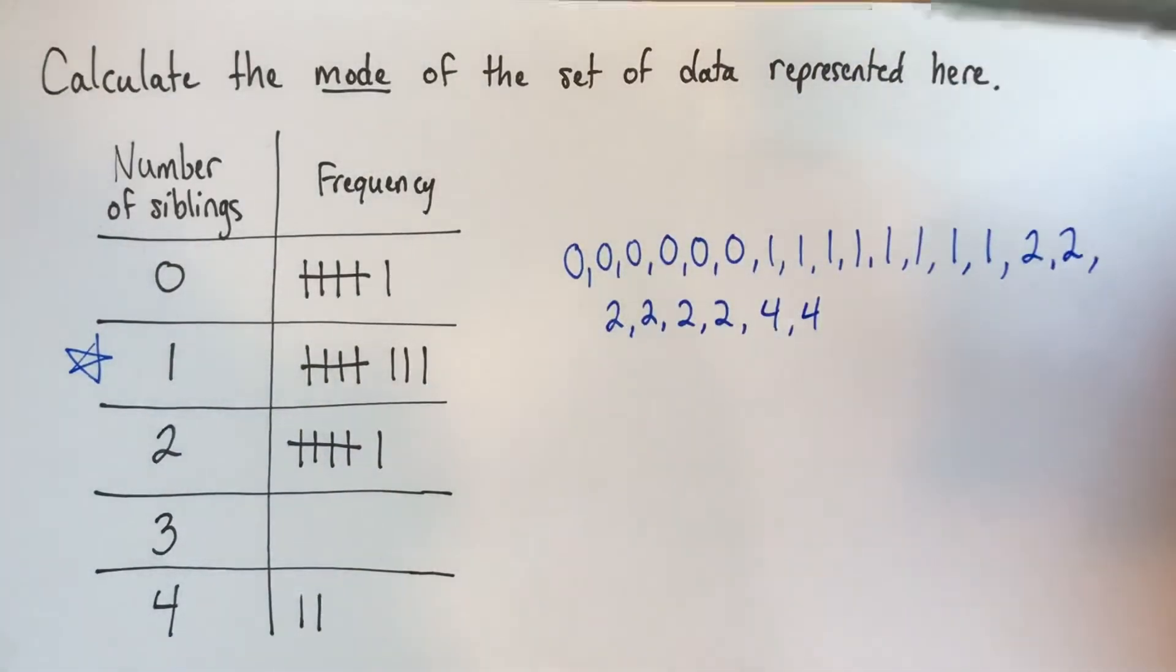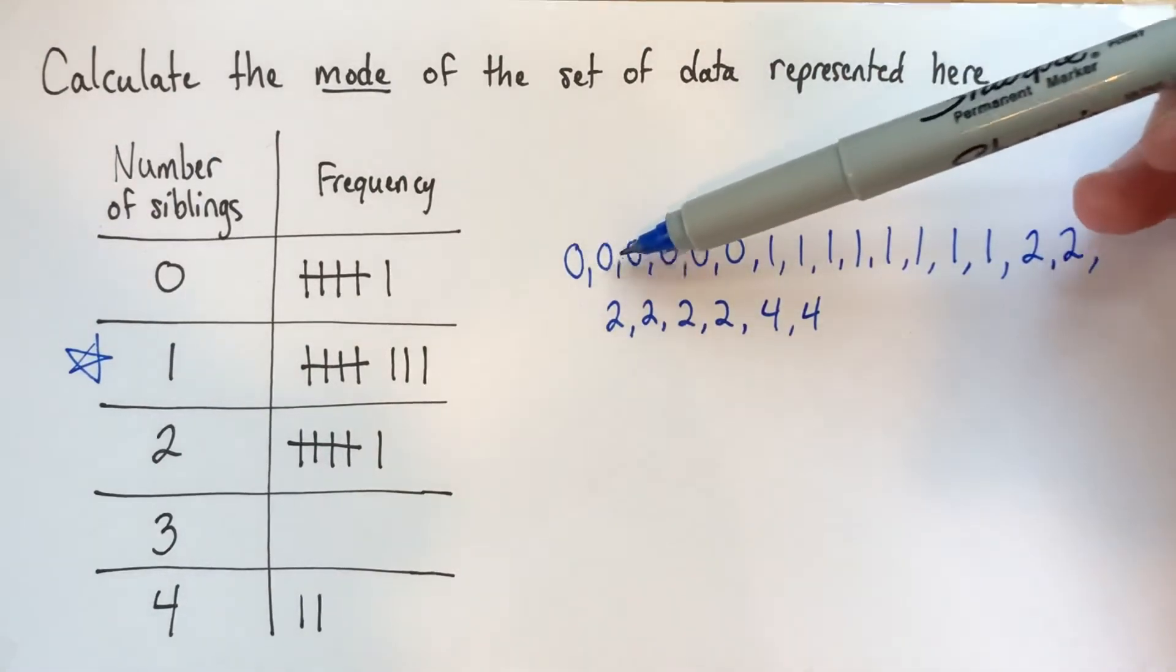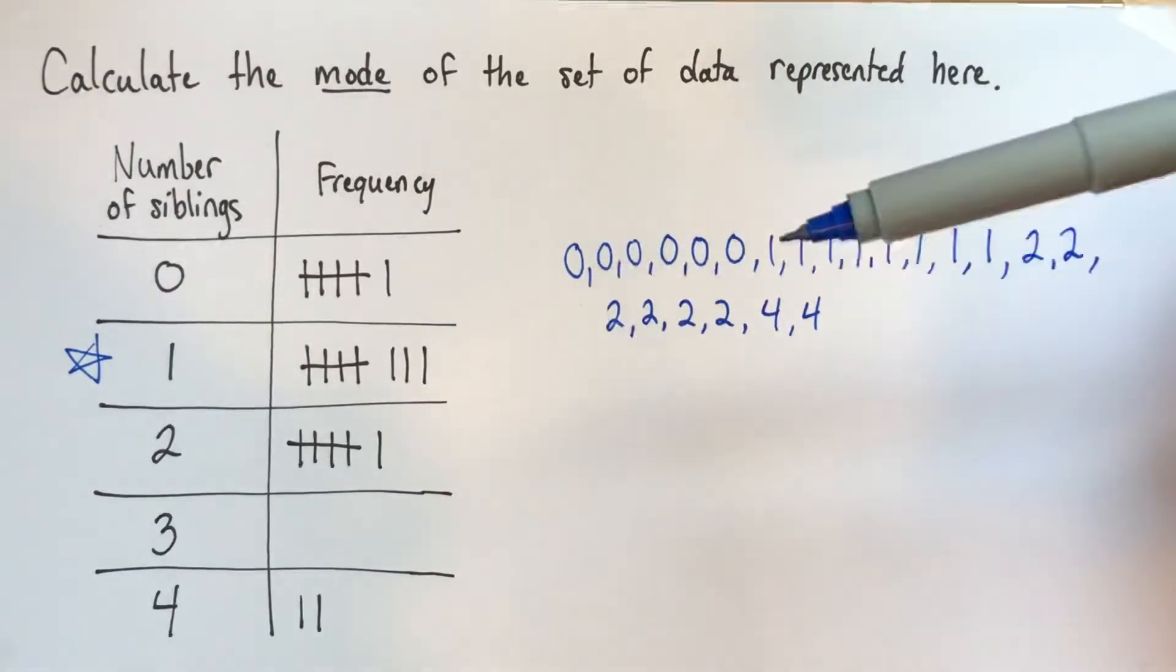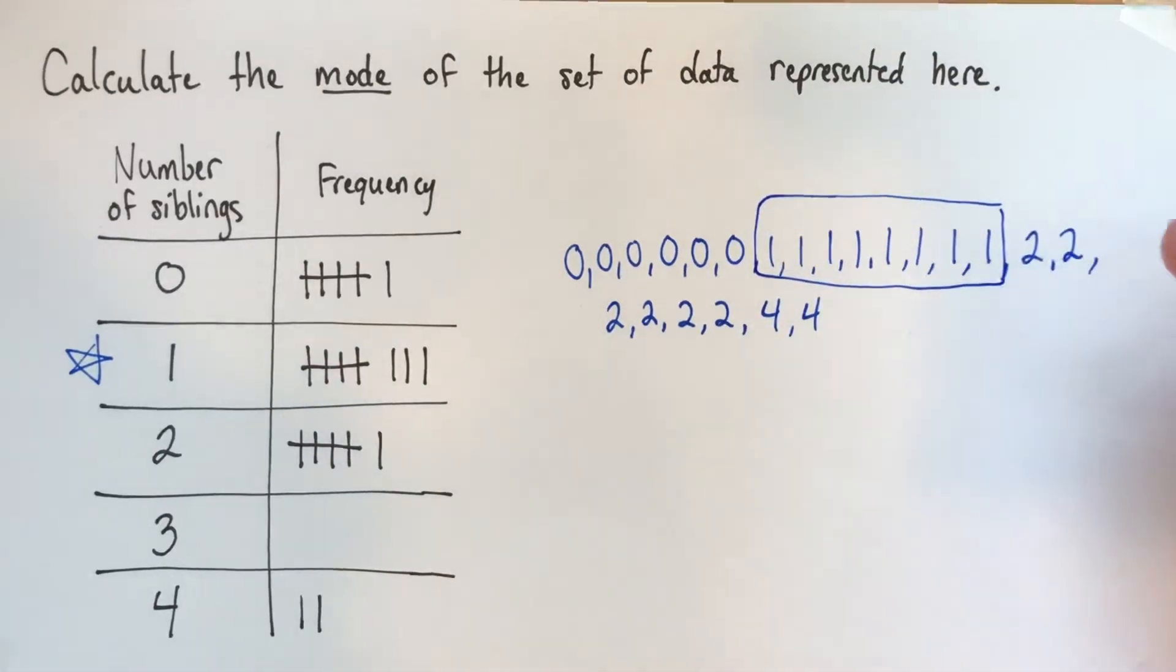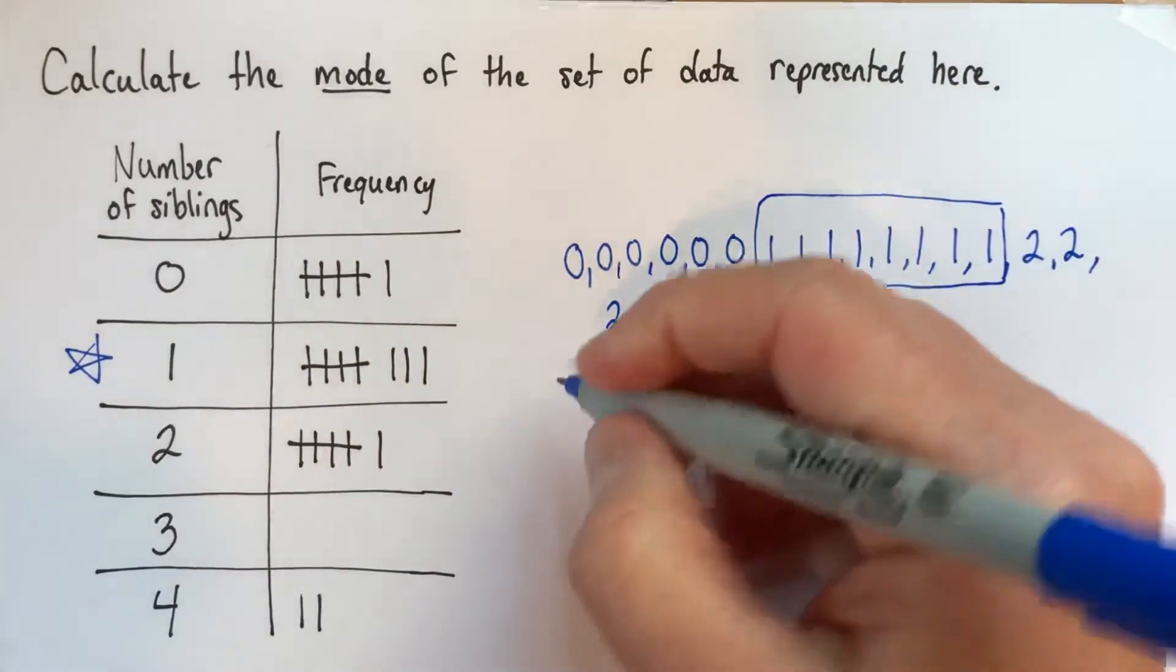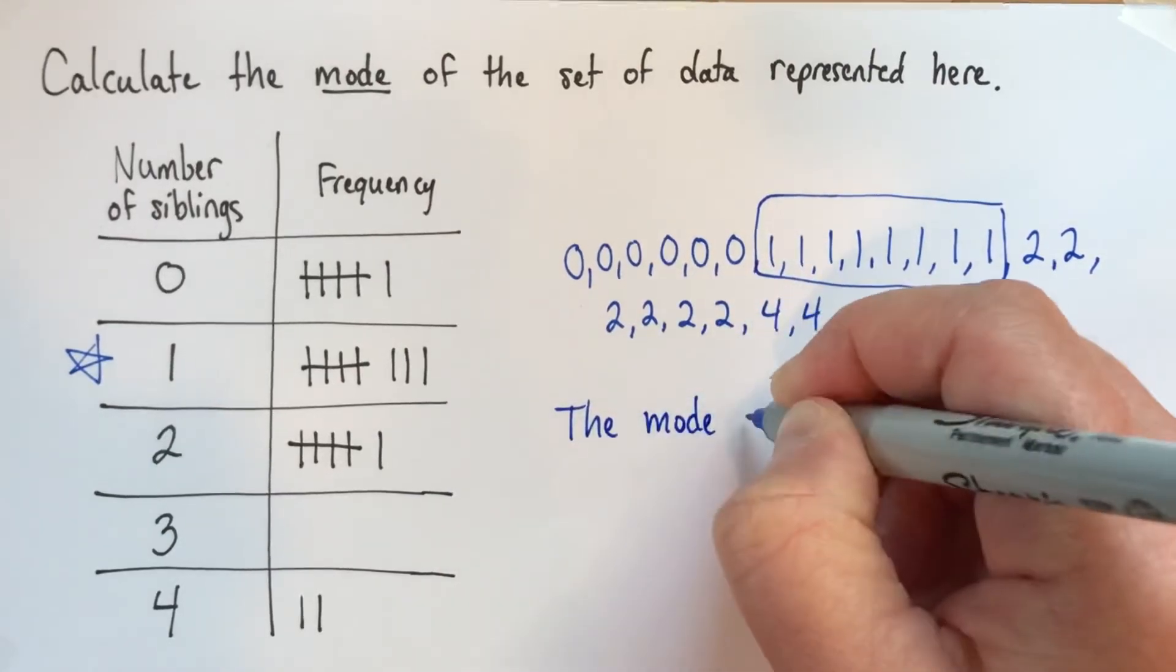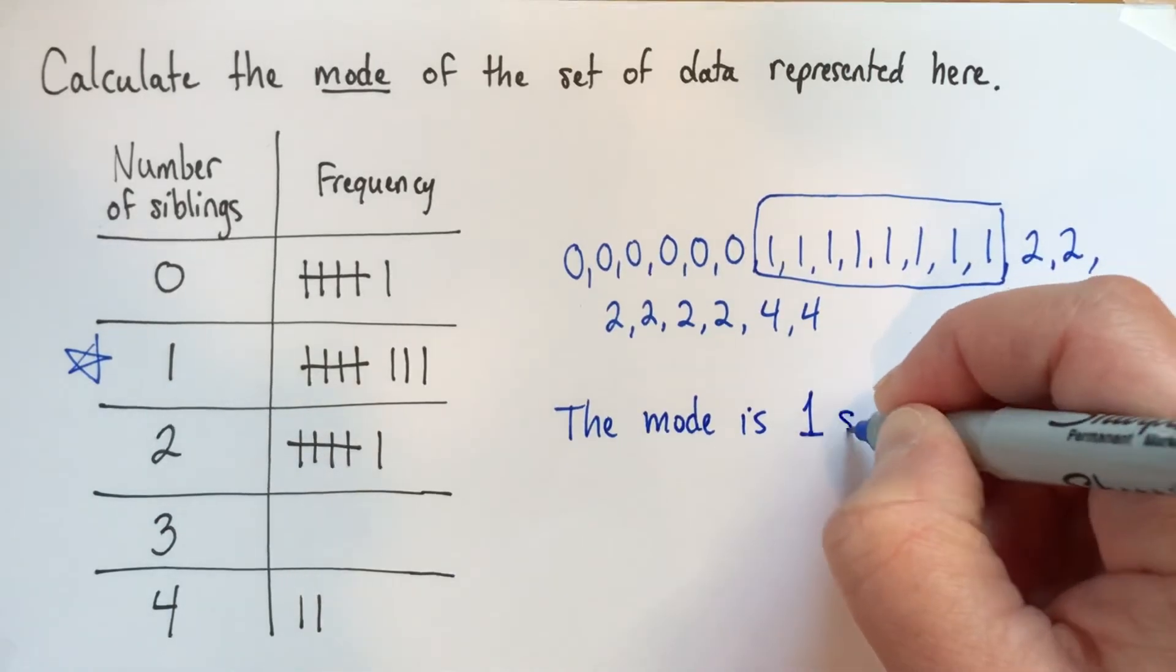So this was our original list. What we're looking for is the number that occurs the most often in this list. There are 6 zeros, 8 ones, and so on. The number that occurs the most often is 1. So the mode is 1, or 1 sibling.